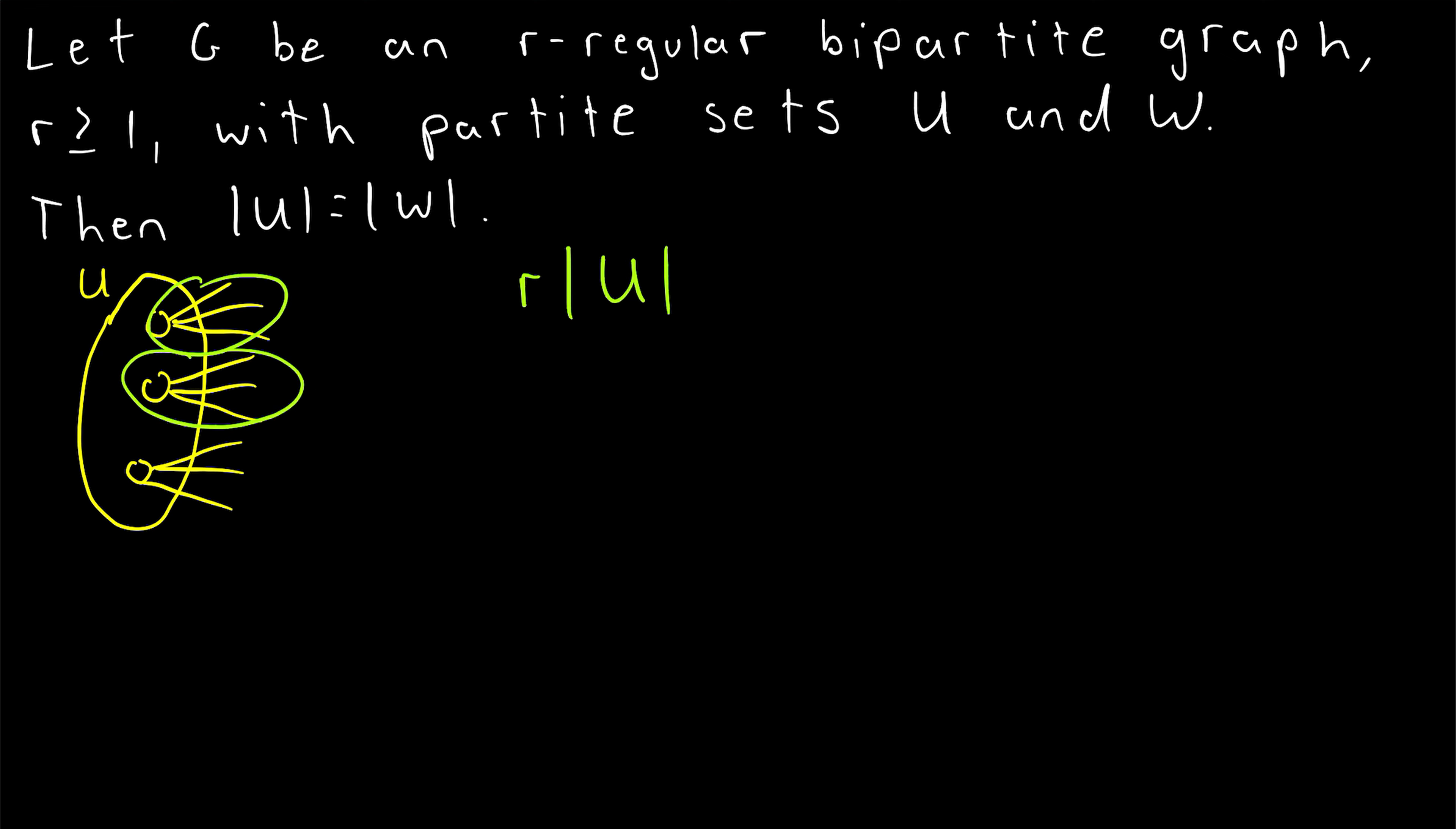So r times the number of vertices in the partite set U, that's the number of edges in the graph. And perhaps you see where this is going.